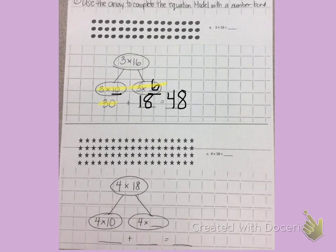So 3 times 16 is 48. I am going to check that by counting by 3's on my array. 3, 6, 9, 12, 15, 18, 21, 24, 27, 30.